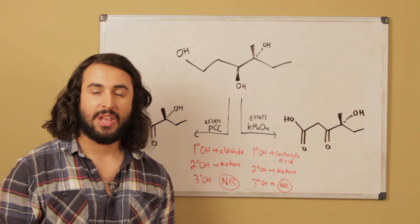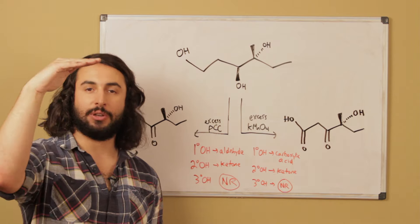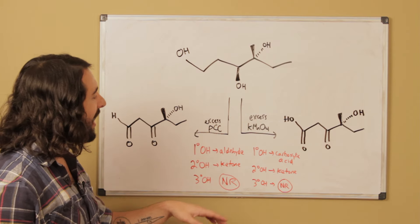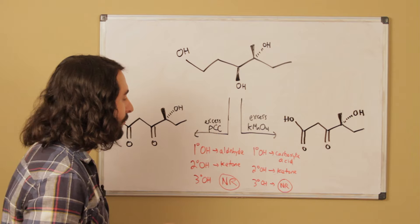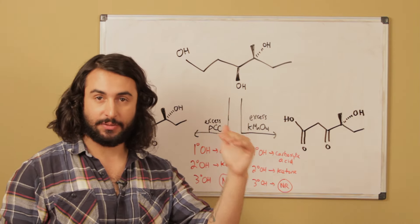Let's review really quickly what these do to different kinds of alcohols. PCC is going to take a primary alcohol and it oxidizes it only to the aldehyde level. It is not going to be able to go further than that, whereas potassium permanganate will take a primary alcohol and convert it to the carboxylic acid functional group level.